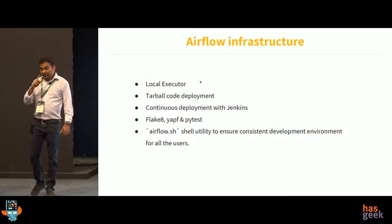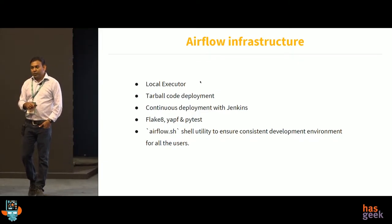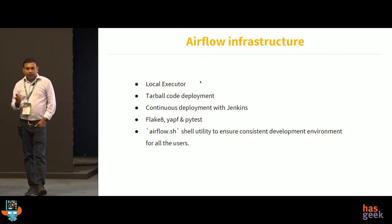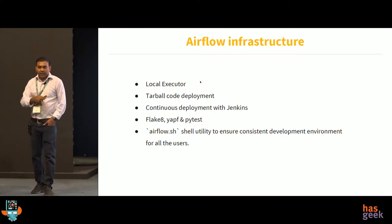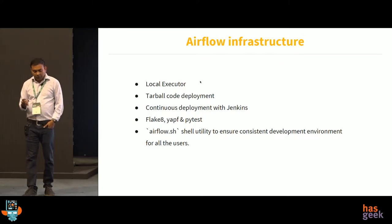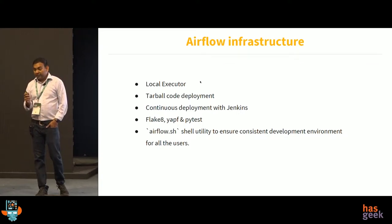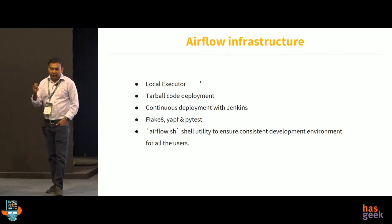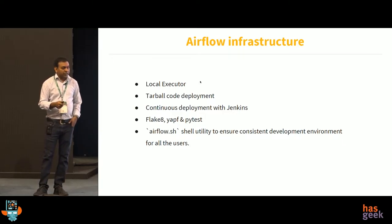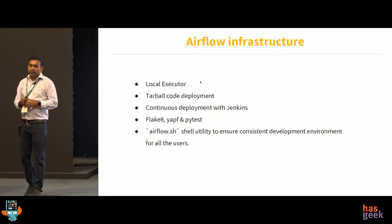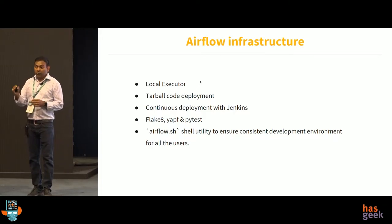Surprisingly, at Slack we use the local executor — not Celery or any other distributed executor. The reason: in the cloud/AWS era, CPU and memory are very cheap; your code isn't. The moment you introduce Celery or another executor system, you add more complexity. Our philosophy is: given a single box, how can we burn more CPU and memory and minimize maintenance cost without adding extra components?